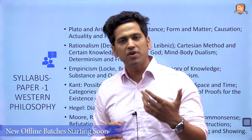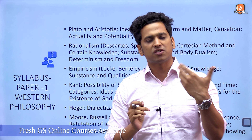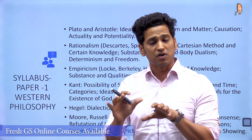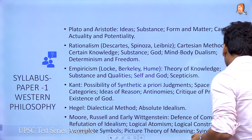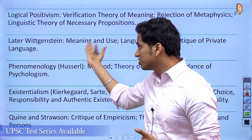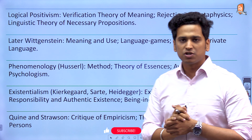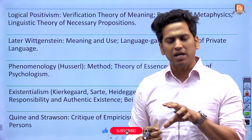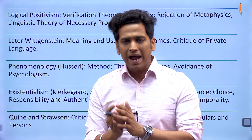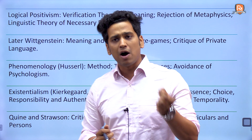We have Plato and Aristotle, then theories of rationalism and empiricism, then Kant — one of the most important theories in philosophy — followed by Hegel, Moore, Russell, and early Wittgenstein. Building upon this, we have logical positivism, later Wittgenstein, phenomenology, existentialism, Quine, and Strawson. These are broadly ten philosophies we have to study from the western philosophy perspective, and all these aspects are very important for UPSC.